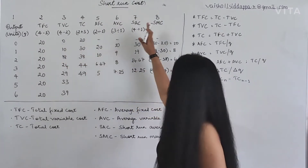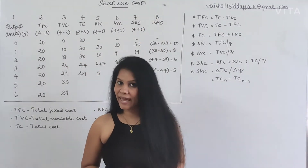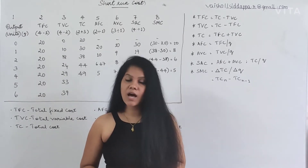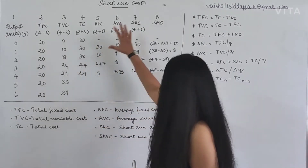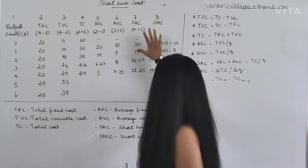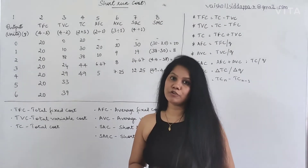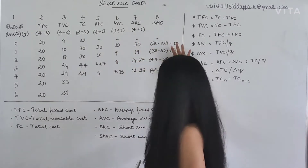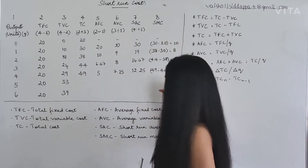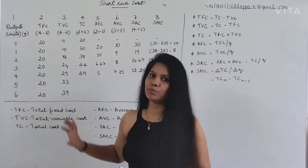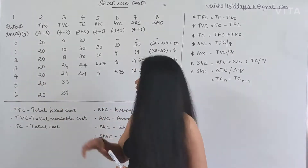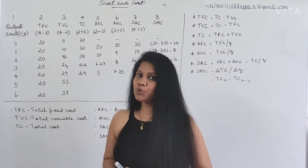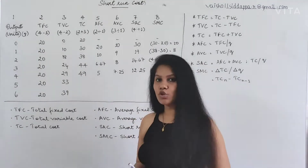So right now, we have the Short-Run Cost. We have eight different costs which we are going to discuss - what exactly each is, what is the formula, and how we are going to find out this. I have a table here with all calculations already done. I have kept only two units calculated to make you understand - that's more than enough.